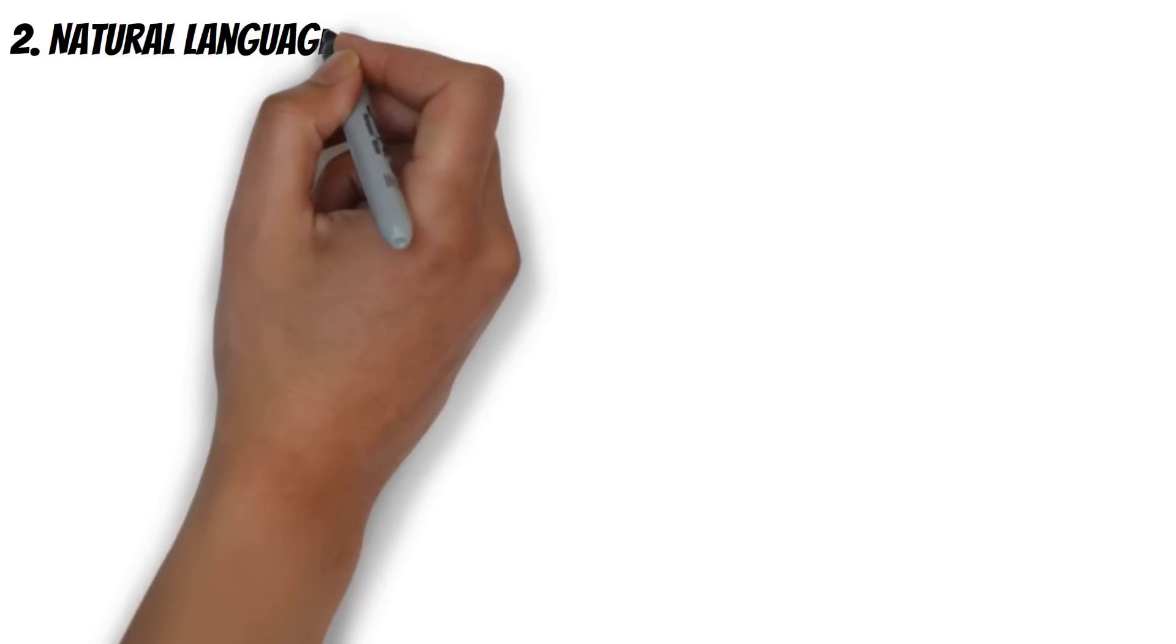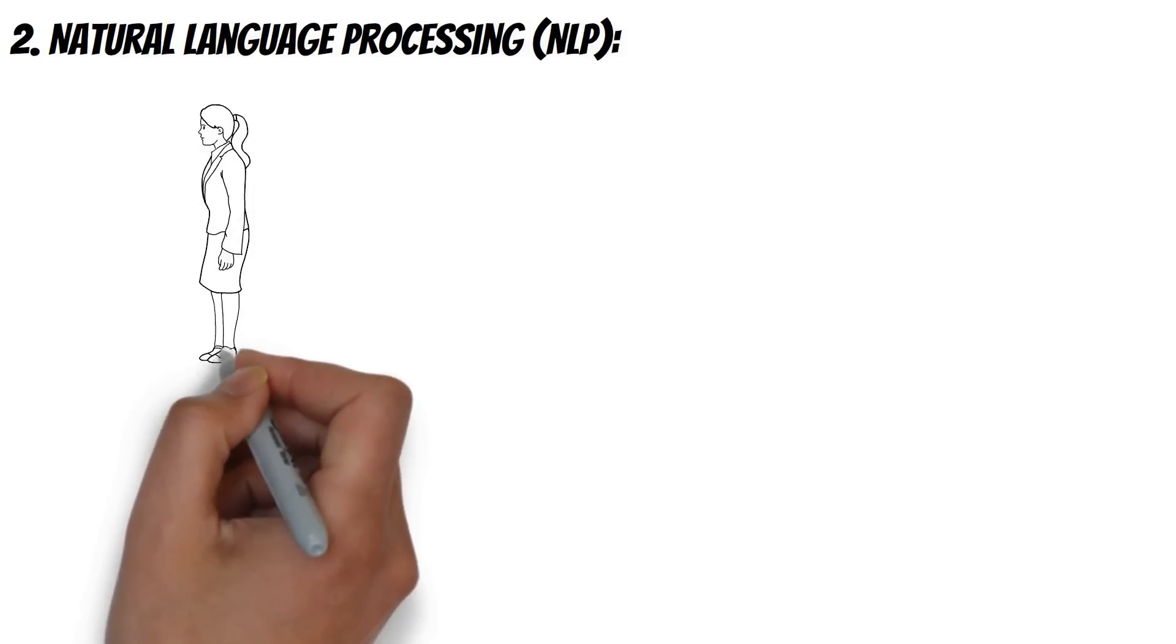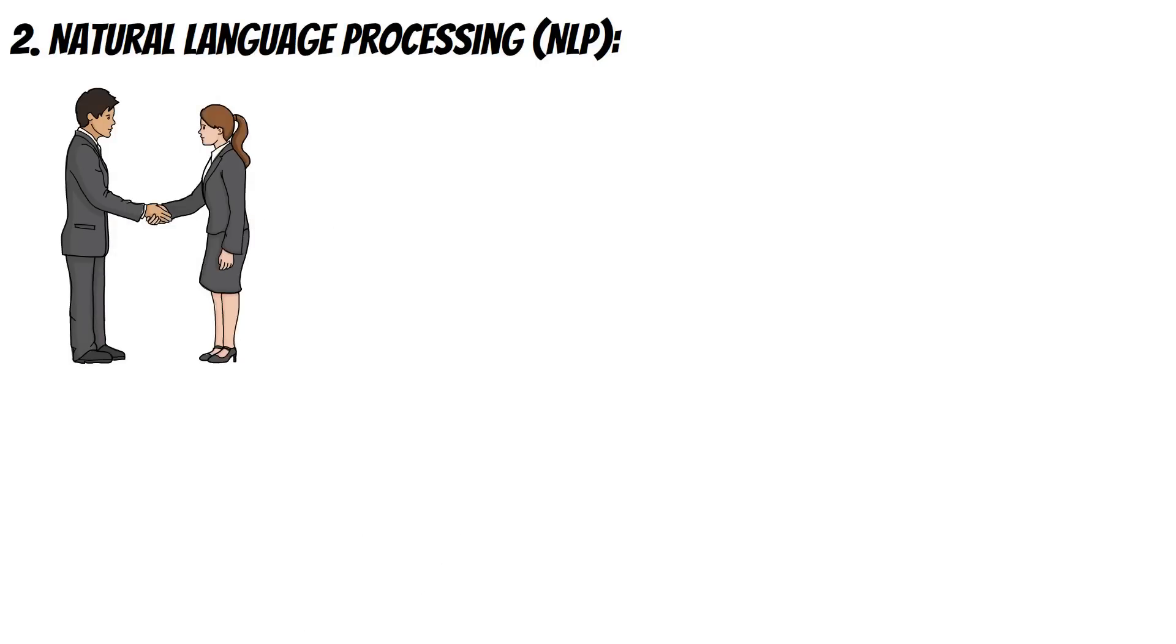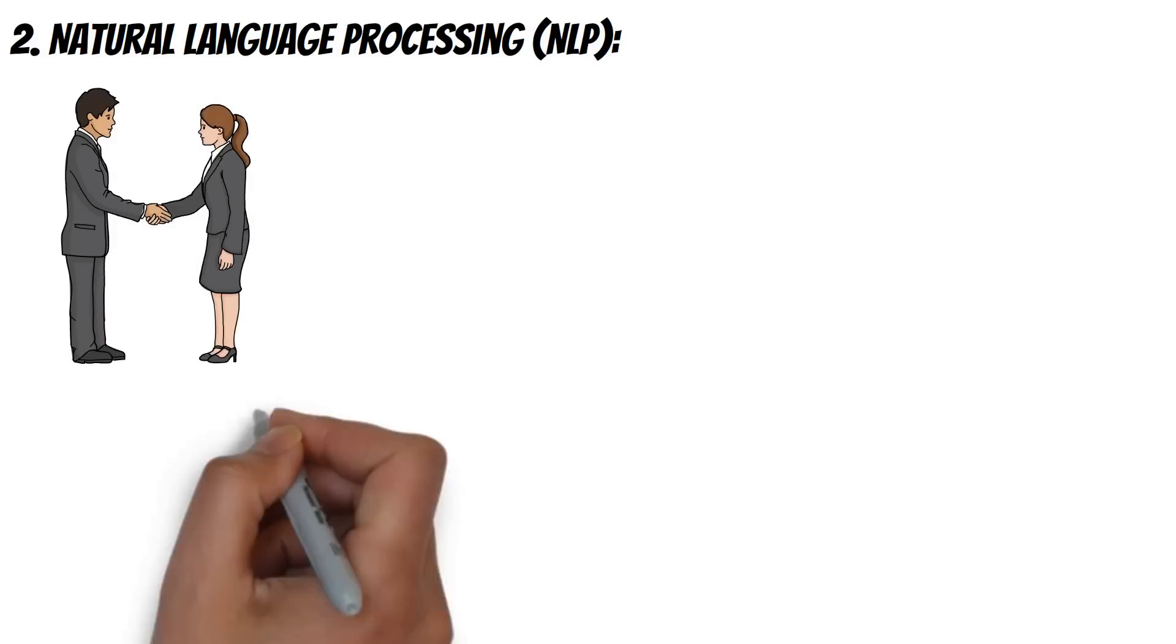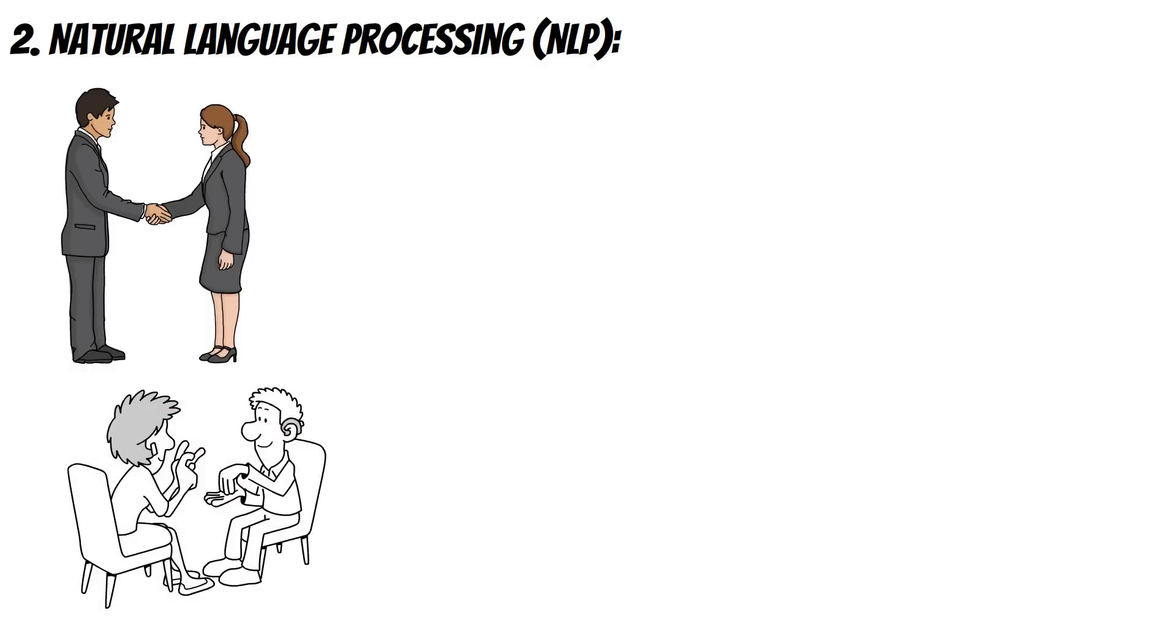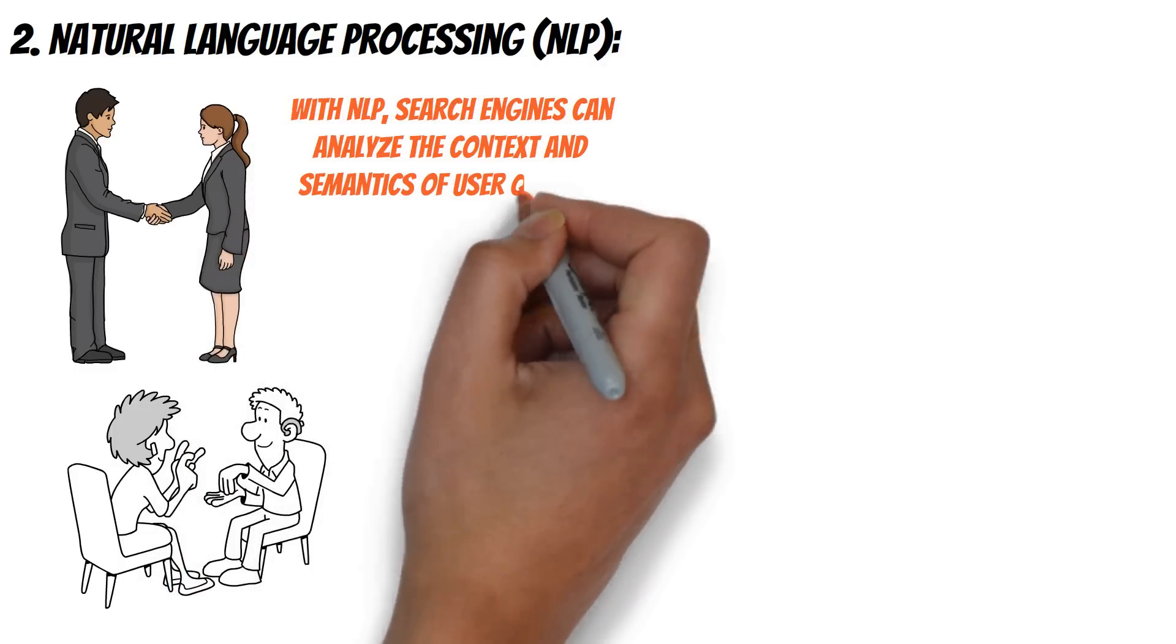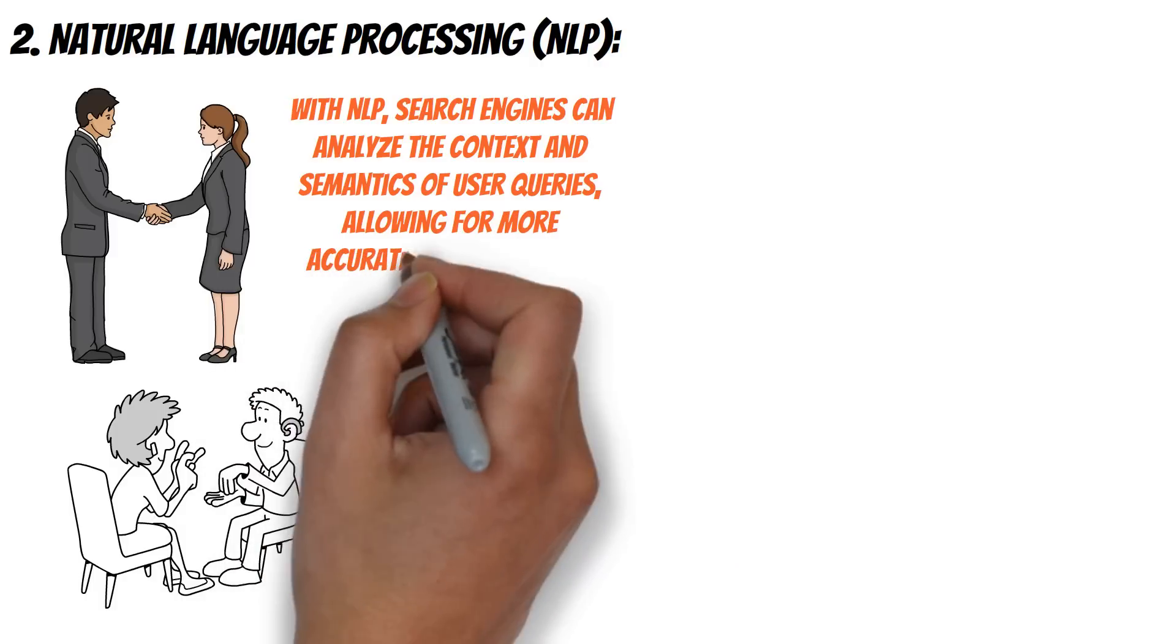Natural Language Processing, NLP, is a subfield of AI that focuses on understanding and processing human language. NLP has revolutionized SEO by enabling search engines to understand natural language queries better. With NLP, search engines can analyze the context and semantics of user queries, allowing for more accurate search results.